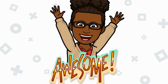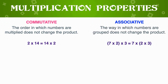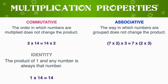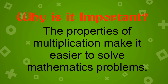Excellent, awesome job! Give yourselves a round of applause. Let's review the multiplication properties we learned today. We learned the commutative property — the order in which numbers are multiplied does not change the product. The associative property — the way numbers are grouped does not change the product. The identity property — any number times 1 is always that number. And the zero property — any number times 0 is always zero. Knowing these properties makes it easier to solve mathematics problems. Thank you for watching, have a nice day!